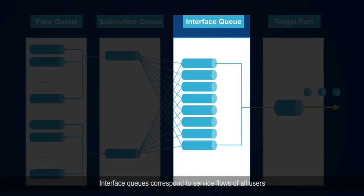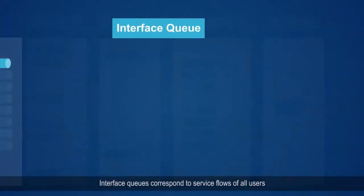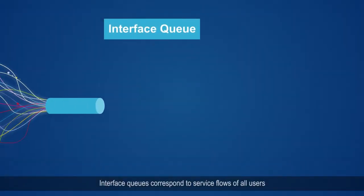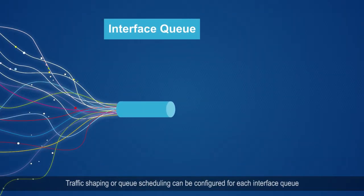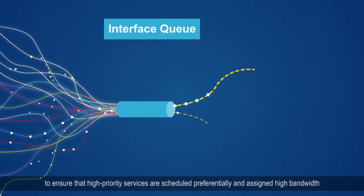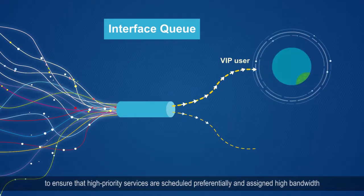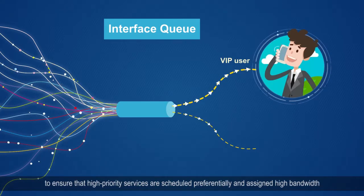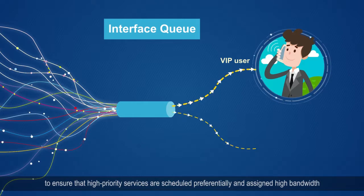Interface queues correspond to service flows of all users. Traffic shaping or queue scheduling can be configured for each interface queue to ensure that high-priority services are scheduled preferentially and assigned high bandwidth.